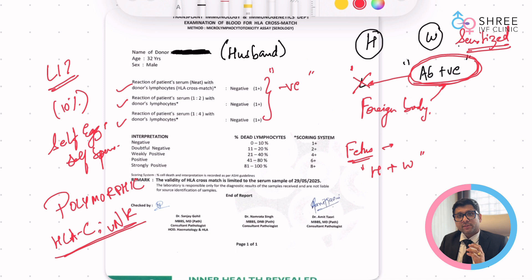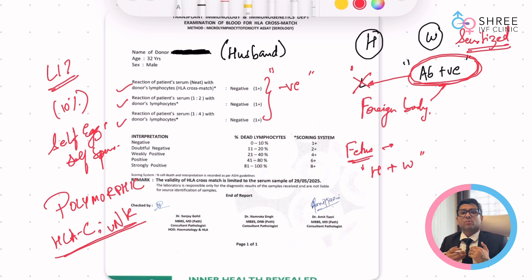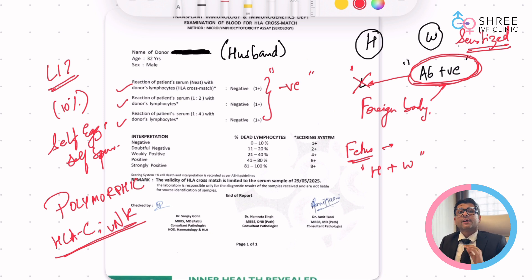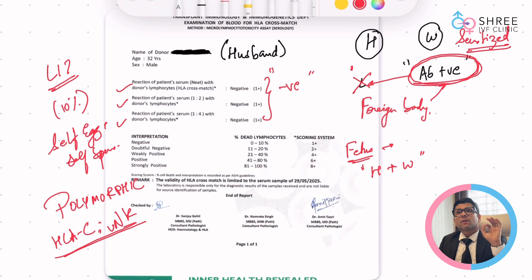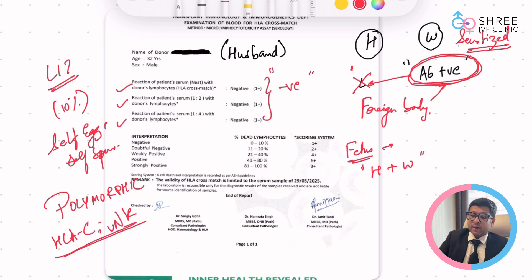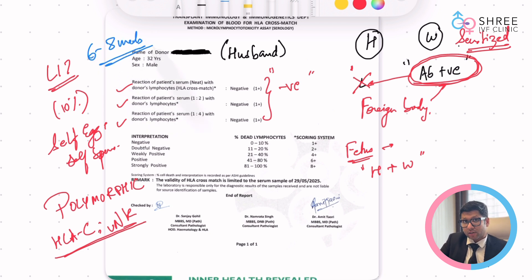The concept is to develop a blocking antibody. When you develop a blocking antibody, it means the immune system is recognizing that this is part of its own immune environment, because the antibody has already been developed and it goes and protects the fetus. How effective is it? After doing LIT, do you need to repeat the test? You can repeat a test if you want after approximately 6 to 8 weeks.